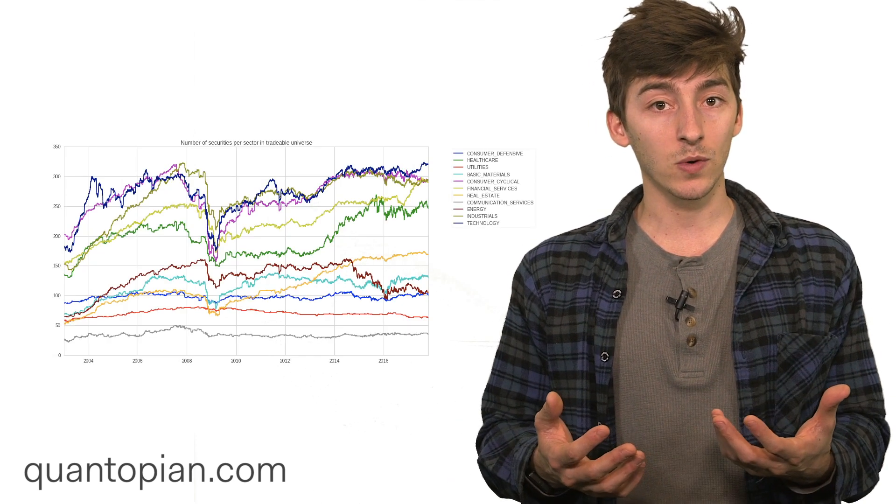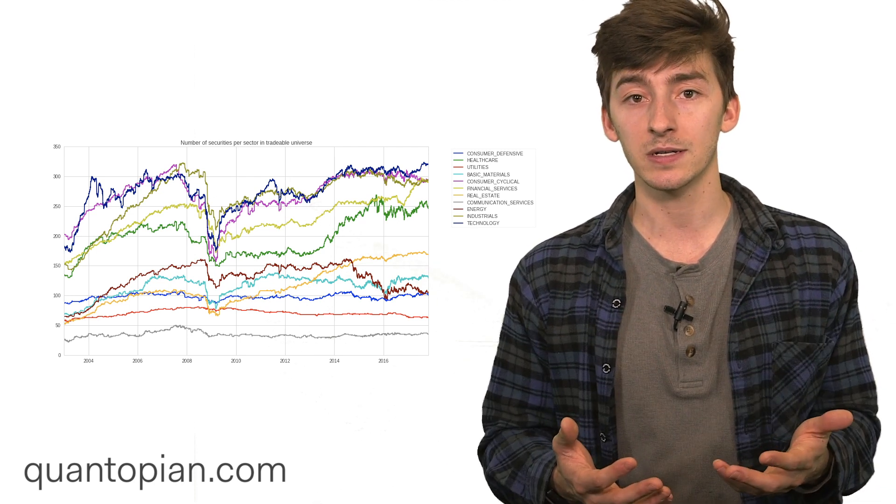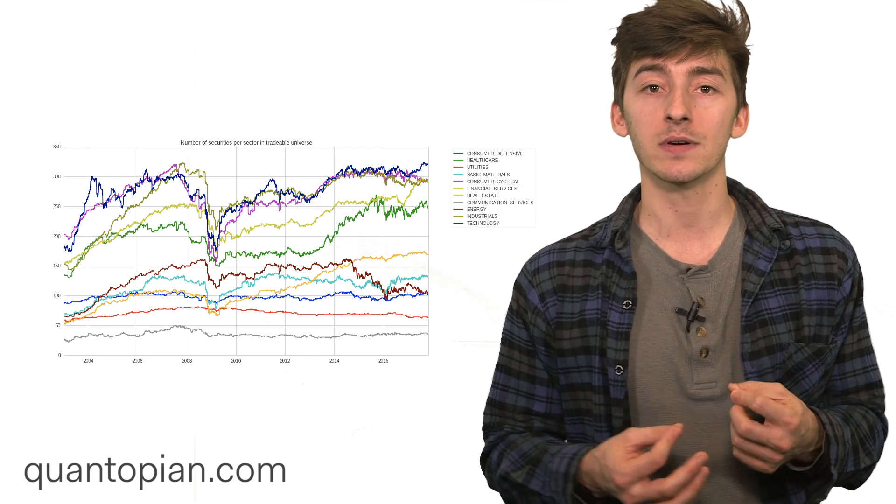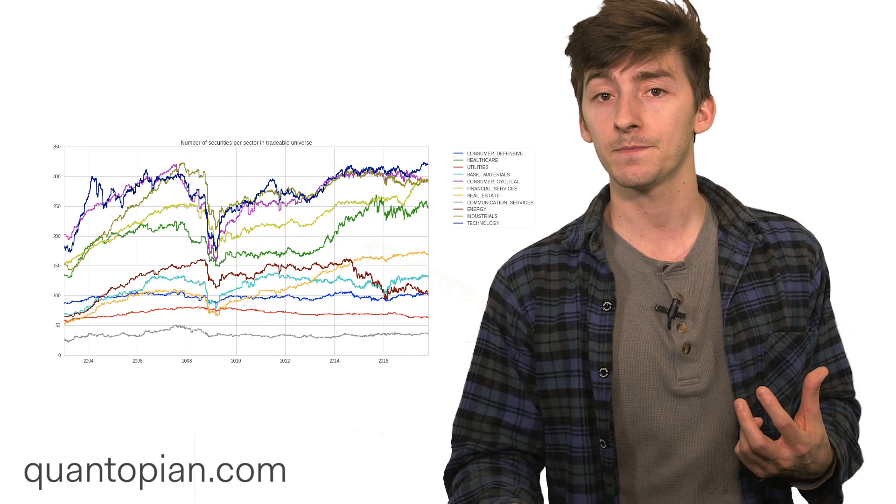Another reason why we might want to restrict the number of securities and the particular securities that our algorithm looks at is because all good trading algorithms are based on some economic hypothesis. An economic hypothesis often comes with some set of assumptions on the trading universe that you're trading within.